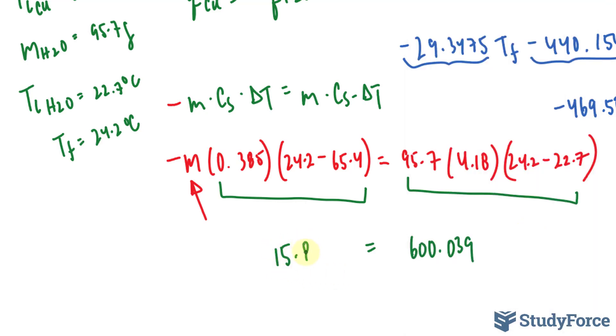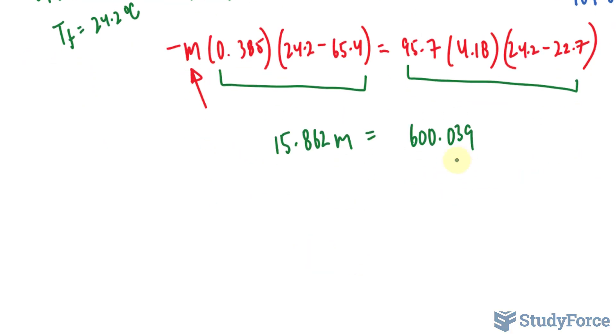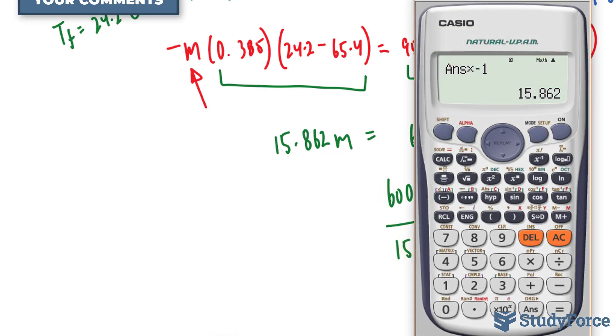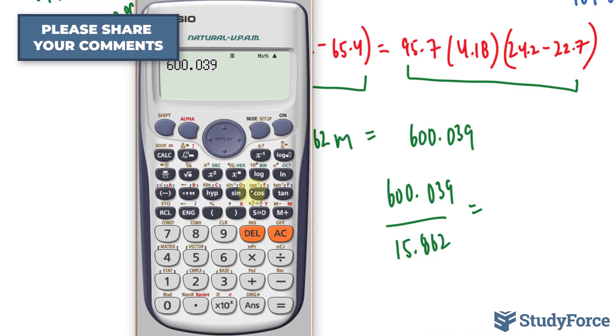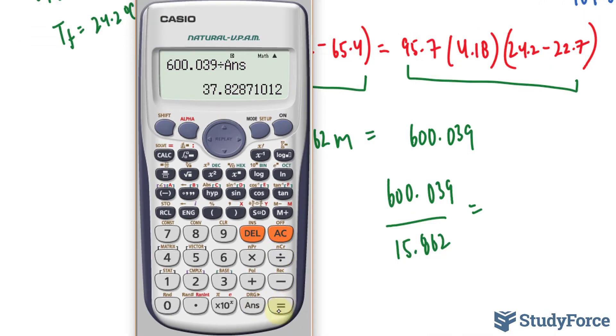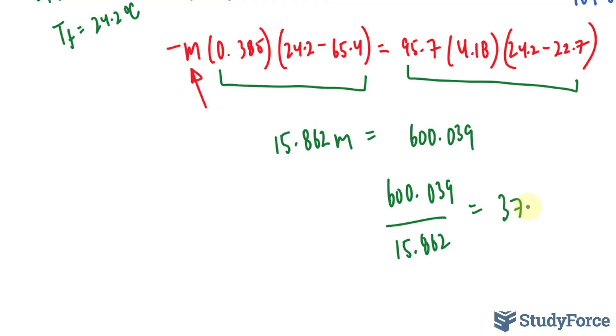15.862 times M. If I take 600.039 divided by 15.862, I'll end up with the mass of copper. Let's write that down. So 600.039 divided by the number that I just found, and I end up with 37.8.